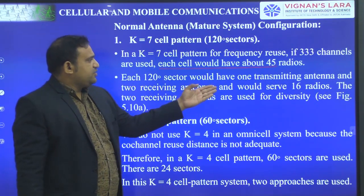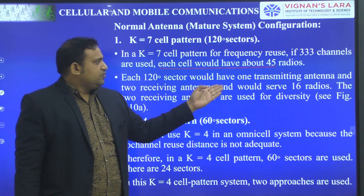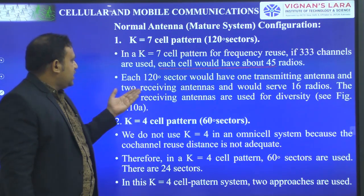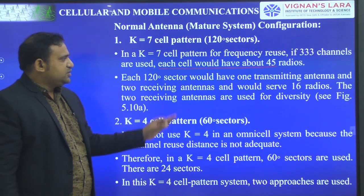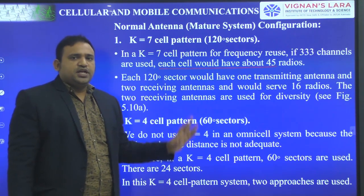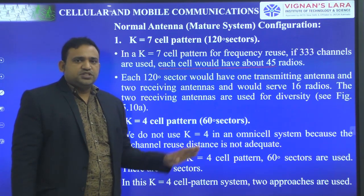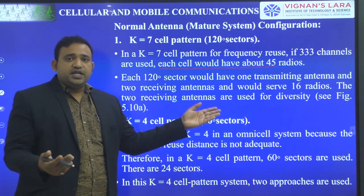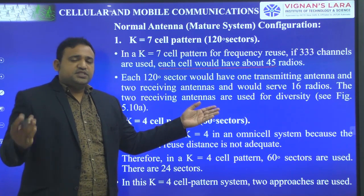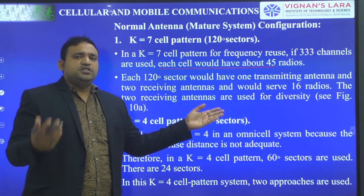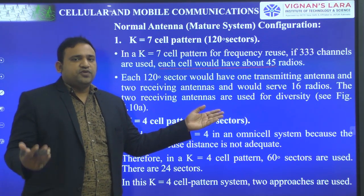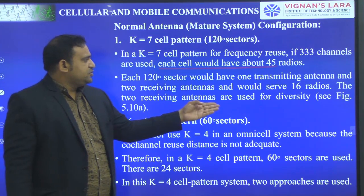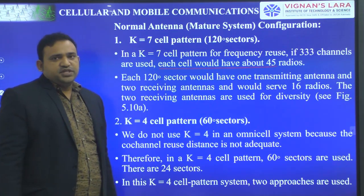For each 120-degree sector, there would be one transmitting antenna and two receiving antennas, and it would serve 16 radios. 16 times 3 is 48 — with 3 setup channels decreasing, the range is 45 voice channels. The two receiving antennas are used for diversity.